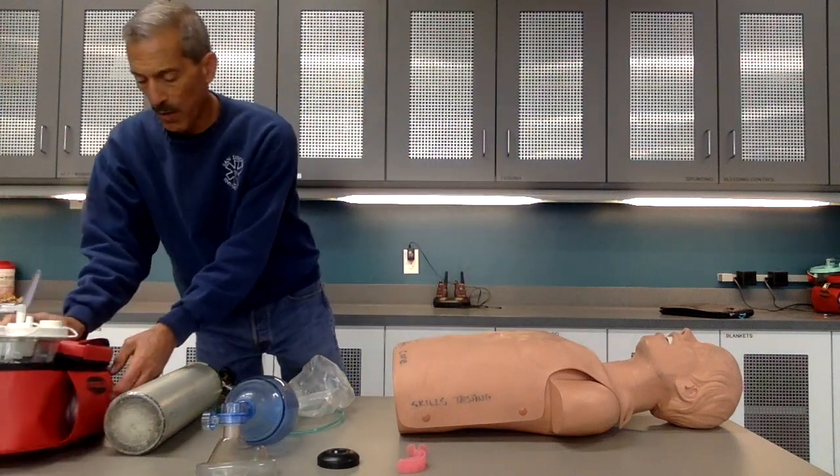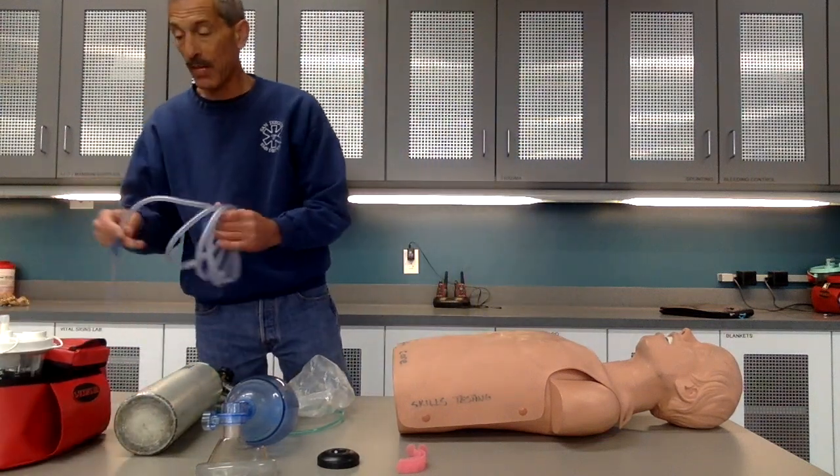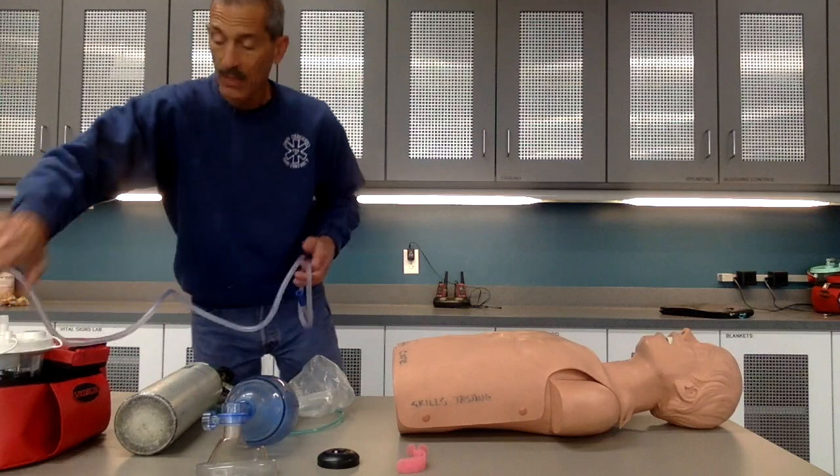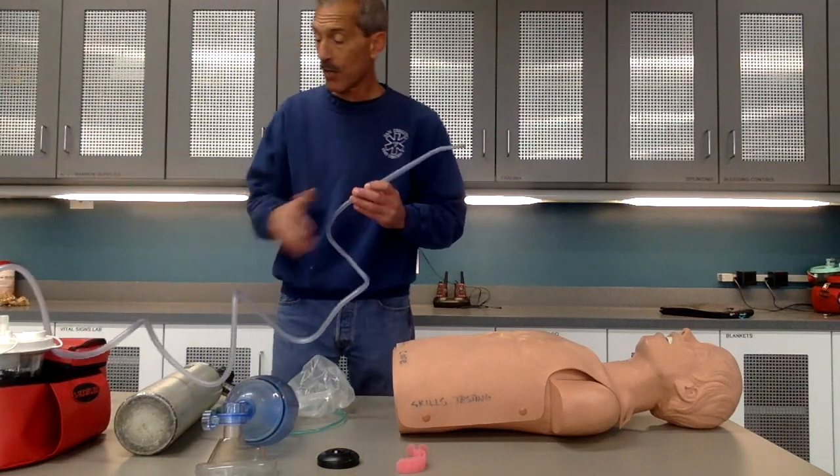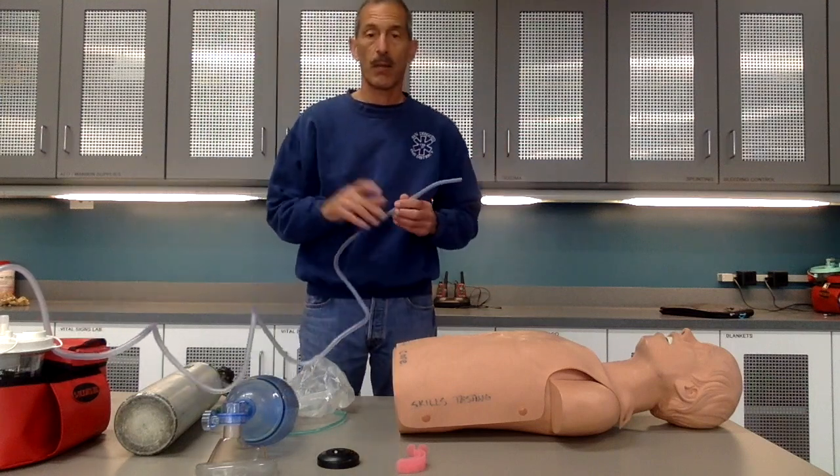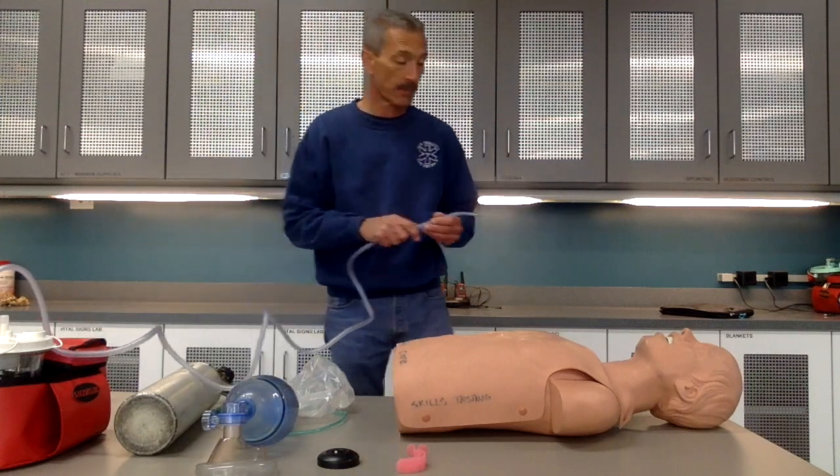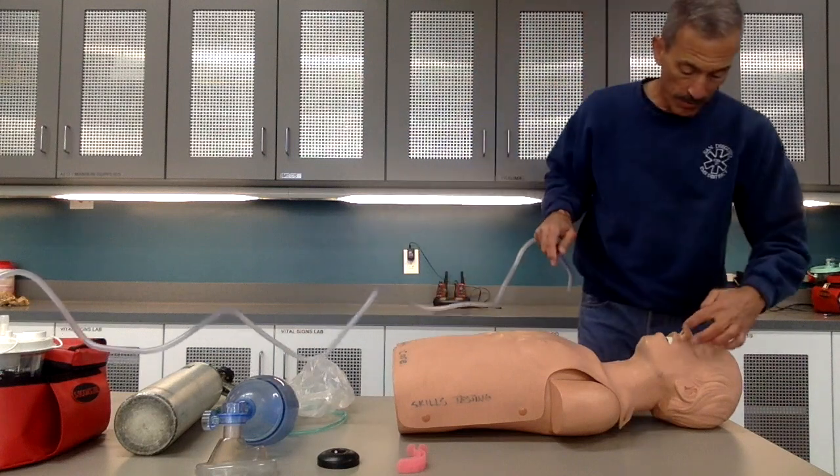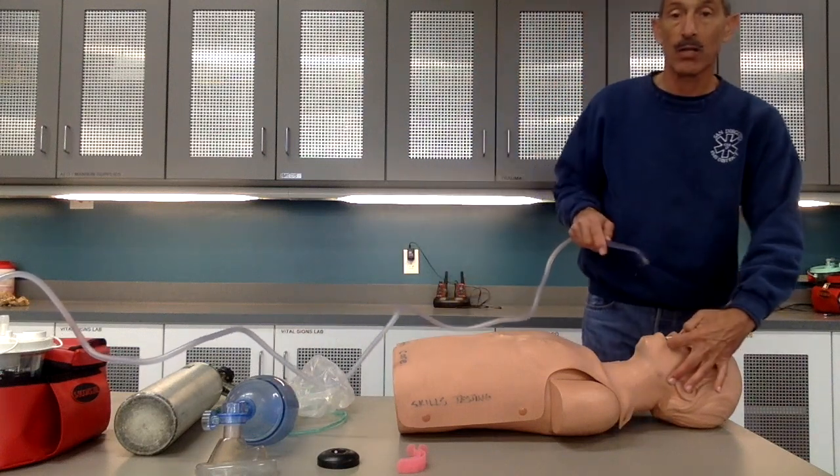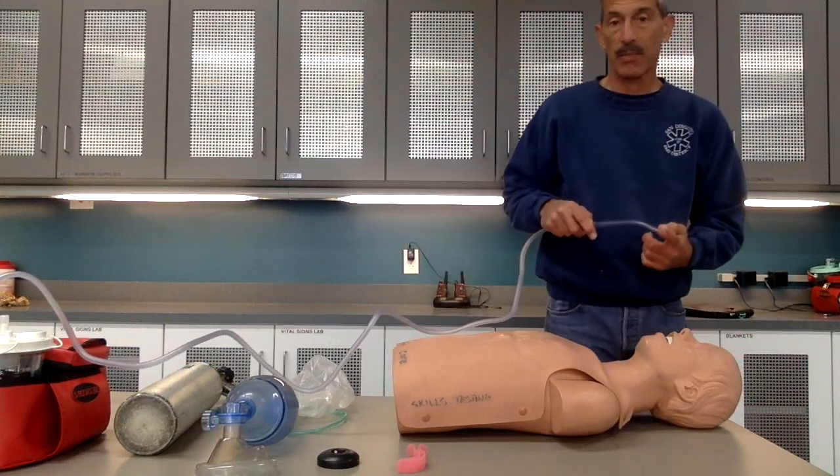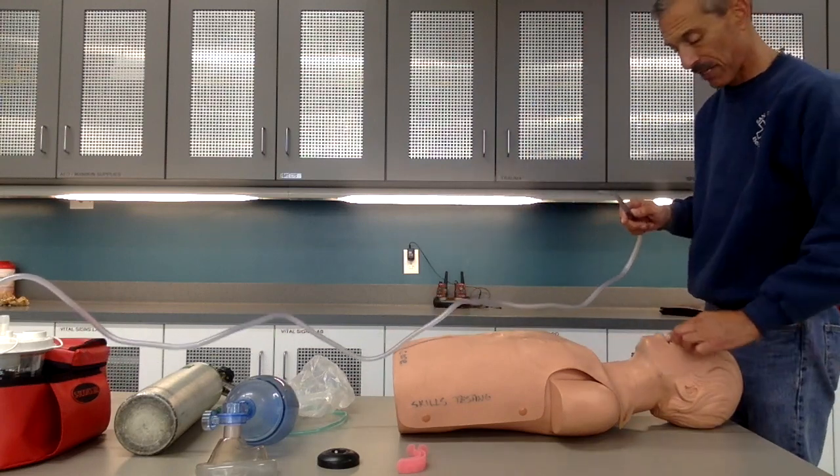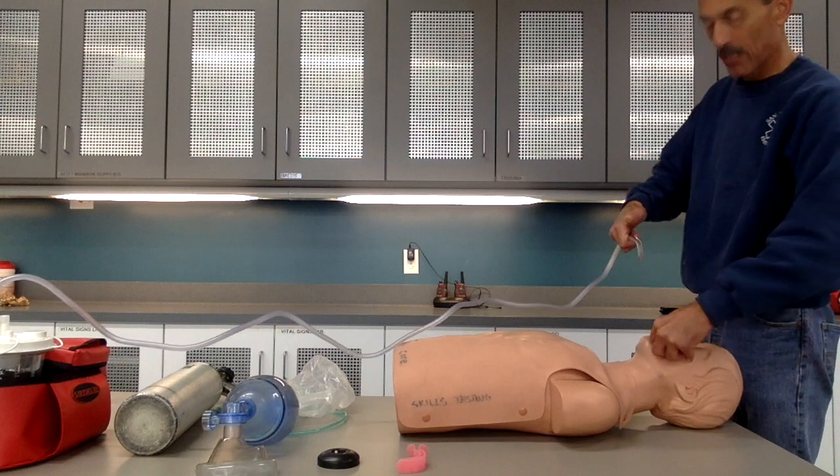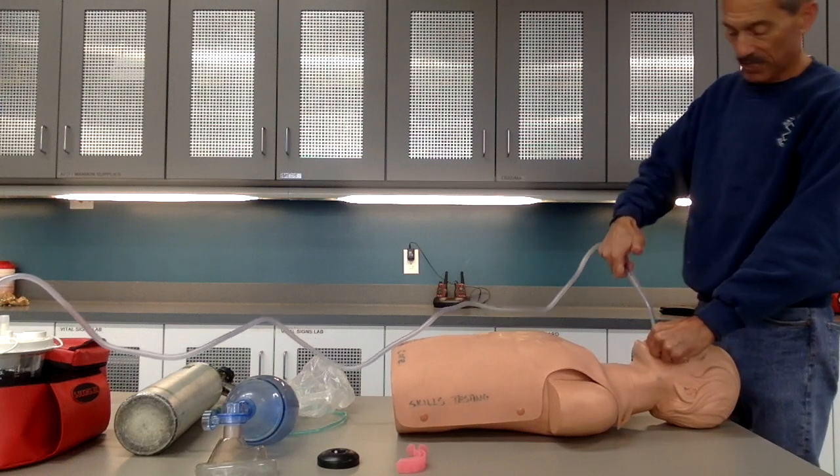I'm going to attach my suction tubing to the patient port, attach my suction catheter to the tubing, turn on the device and test it. The proctor will turn it off for me. I'm going to measure from the corner of the mouth to the angle of the jaw. I'm never going to insert the tip past the base of the tongue at any time. I'm going to open the mouth using the cross finger technique and I'm only going to suction on the way out and no more than 15 seconds.